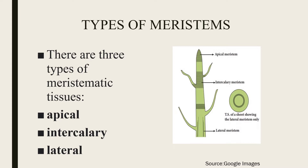Before we start with meristem culture, let us know what the various types of meristems we encounter in plants are. You already studied in your lower classes — there are three types of meristematic tissue: the apical meristem, the intercalary meristem, and the lateral meristem. The apical meristem helps in elongation of the plant, increase in the girth of the plant, and in branching.